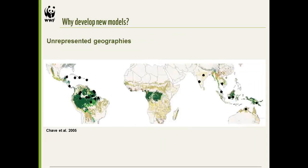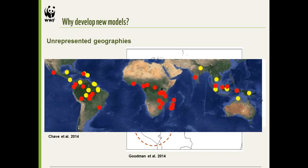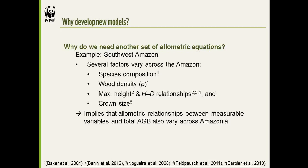Looking at unrepresented geographies: a map from Chave 2005 shows no data from the entire continent of Africa, and a pretty giant gap in the southwestern Amazon. In the new Chave paper, there are a lot more data, especially from all around the Amazon and Asia, and a lot more from Africa.